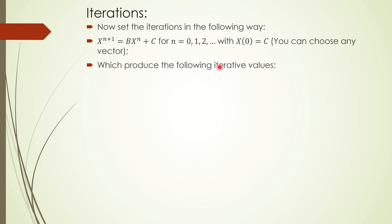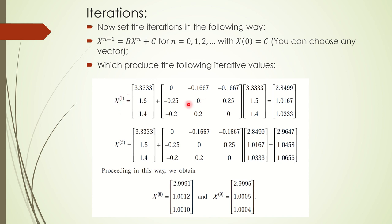The first iterative value yields approximately [3.333; 1.5; 1.4] in simplified form. Continuing, the eighth iteration gives approximately 2.991, and the ninth gives 2.995 — converging toward 3 to three decimal places. Similarly the other variables approach 1. So the solution of the system is approximately x = 3, y = 1, z = 1.